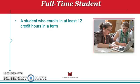A full-time student is a student who enrolls in at least 12 credit hours during the fall or spring semester. Enrolling in fewer than 12 credits during the fall or spring semester means the student is a part-time student — they are not going to school full-time. International students must be full-time students for visa purposes.